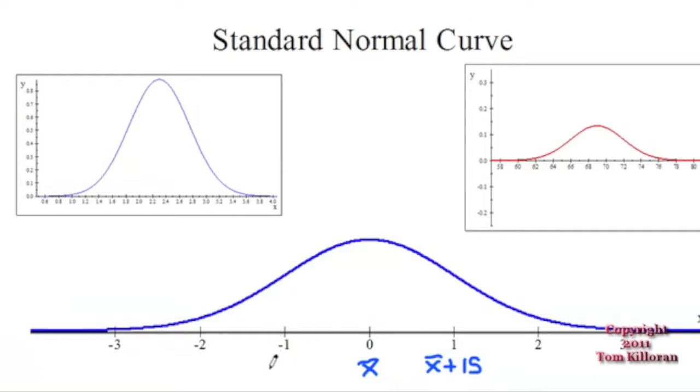And then back here we would go x̄ minus one standard deviation, whatever that would have been. And we can tell a lot of information just from this. This is what's called a standard normal curve.